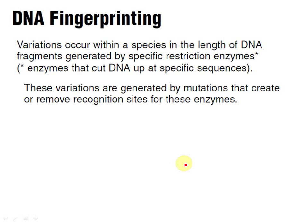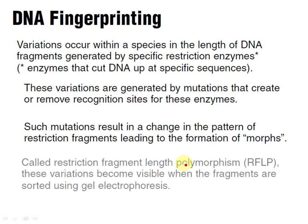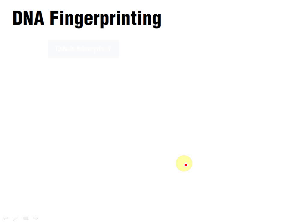Why do we all have different DNA? It's due to stuff called mutations — we're going to be having a look at these in different classes. What these mutations do is result in our different restriction fragments having different lengths. And we can sort these out obviously using gel electrophoresis.